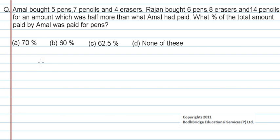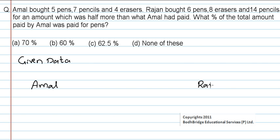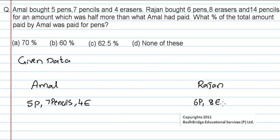Let us write the given data first. Amal bought some things and Rajan bought some things. Amal bought 5 pens, 7 pencils and 4 erasers. Whereas Rajan bought 6 pens, 8 erasers and 14 pencils.